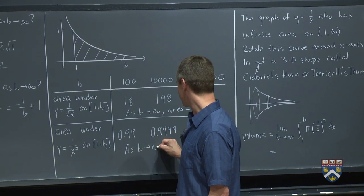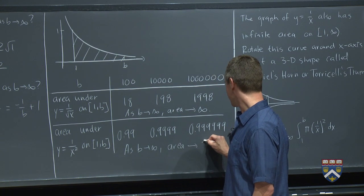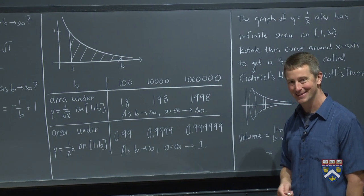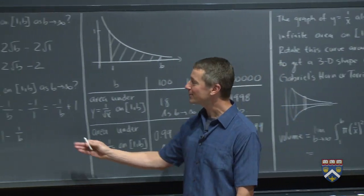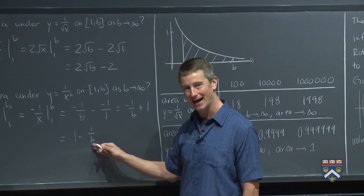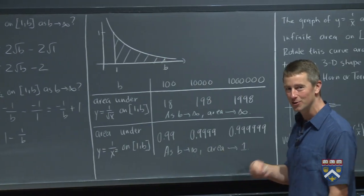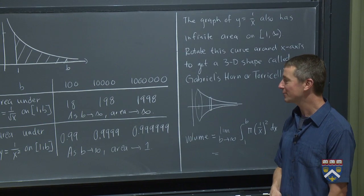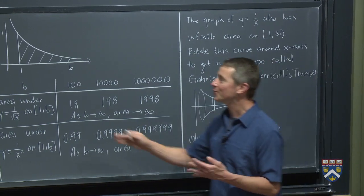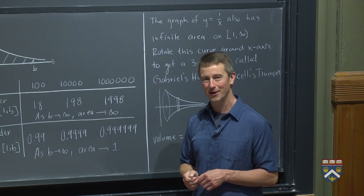As b goes to infinity, in this case, the area just gets closer and closer to one unit. In fact, you can see it will never get above one unit because we're always taking 1 minus some tiny, tiny, tiny positive value. It keeps getting closer and closer and closer to 1, but never quite gets there. So even though the shape is infinitely long, it only has one unit of area.